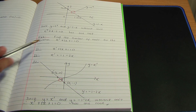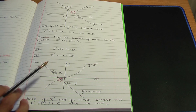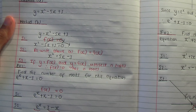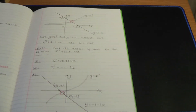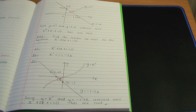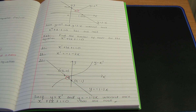Those are the steps for Method B — highlighted in red — to work out the number of roots. That completes the examples and ends the video. I hope you found this video helpful. Do the related practice questions, and I hope to see you in the next video. Thank you.